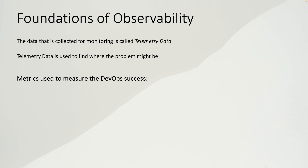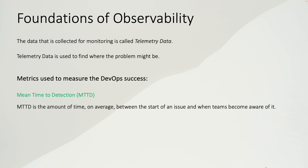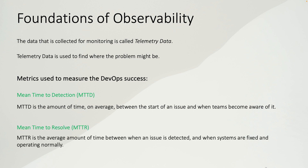There are two metrics used to measure DevOps success. The first is Mean Time to Detection, or MTTD — the average time between the start of an issue and when the team becomes aware of it. The second is Mean Time to Resolve, or MTTR — the average time between when an issue is detected and when the systems are fixed and operating normally.